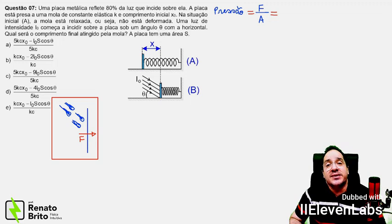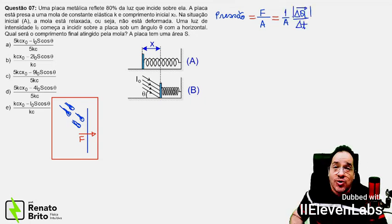So the concept of pressure, even in this context, is still the force that the photons will apply to that surface divided by the area. And this force will still be given by the rate of change of the momentum of these photons, that is, delta Q over delta T.